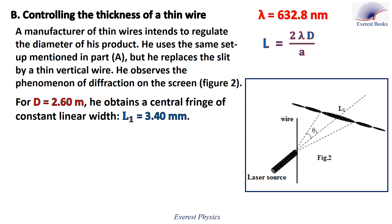Let's move to Part B, which is about controlling the thickness of a thin wire. A manufacturer of thin wires uses the same setup as Part A, but replaces the slit with a thin vertical wire, and observes diffraction on the screen. The diffraction pattern is similar to Part A. For D equals 2.60 meters, he obtains a central fringe of constant linear width whose value is 3.40 millimeters.